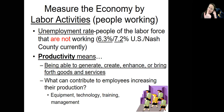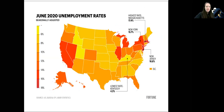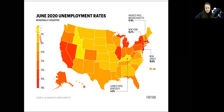Some things we can do to increase our productivity: better technology, improved equipment, additional training, and good leadership. Compared to the other states in our country — this was June of last year — you can see North Carolina is in the 6% to 8% unemployment range, and I think that's pretty good. It looks like we're doing fairly well compared to the other states.